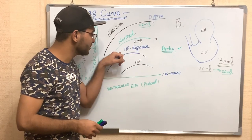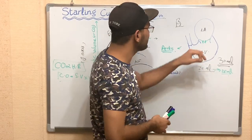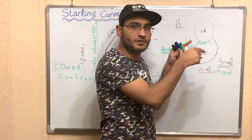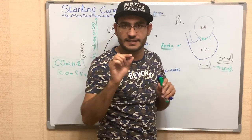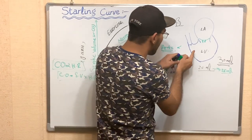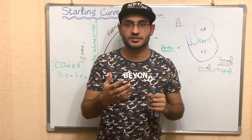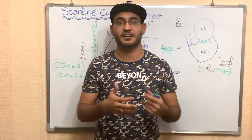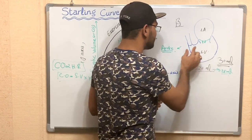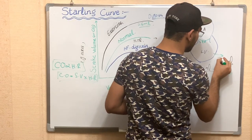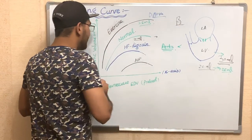In heart failure or mitral stenosis, preload decreases because it is difficult for blood to flow from the left or right atrium into the ventricle. When less volume enters the ventricle, the volume pumped out to the vessel also decreases. In conditions like congestive heart failure, cardiac tamponade, or pericarditis, contractility is decreased and stroke volume is reduced even if 30 milliliters of blood is present in the ventricle.